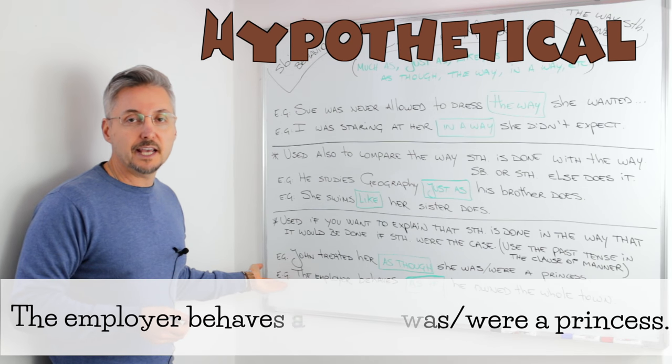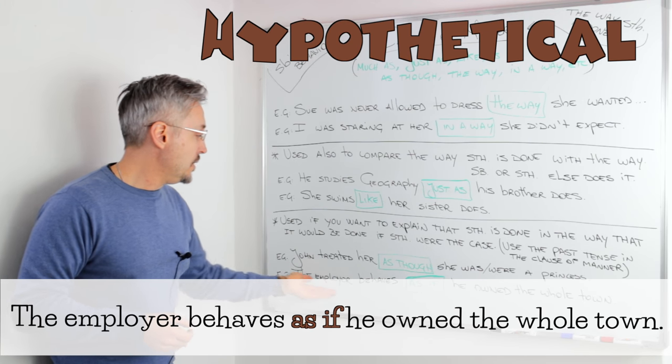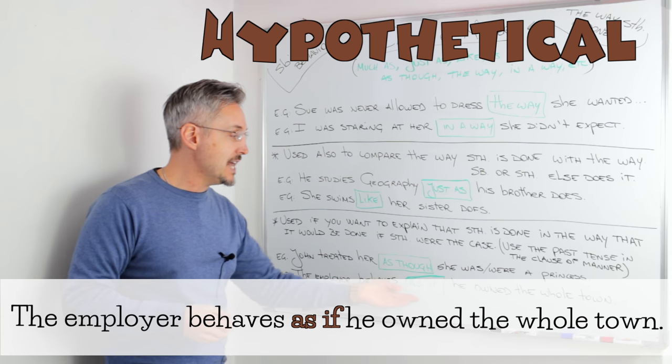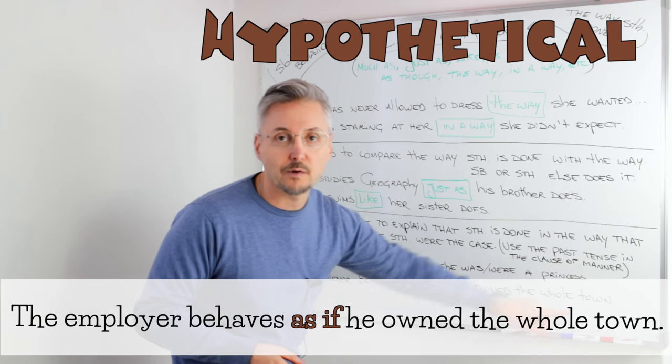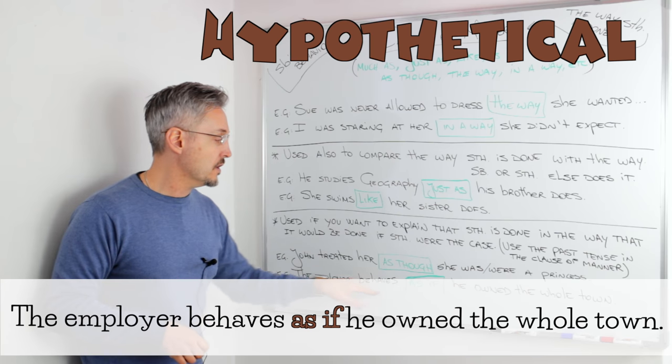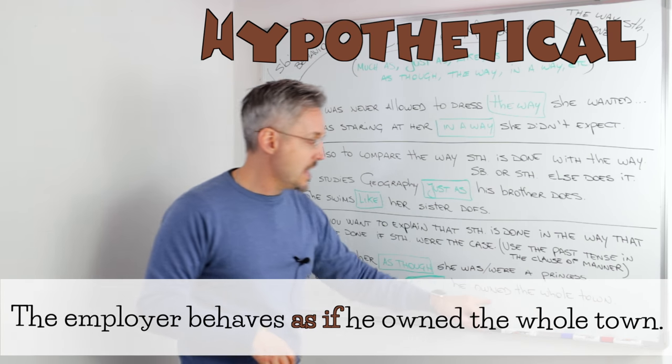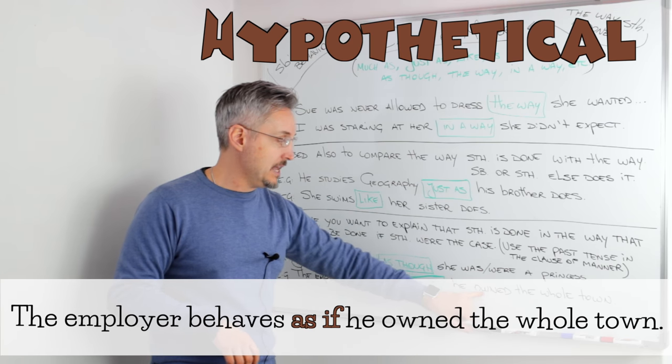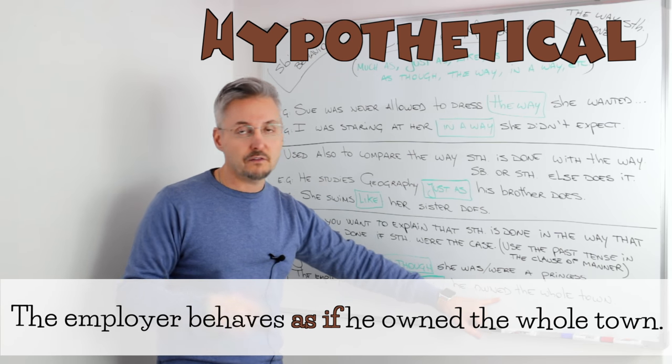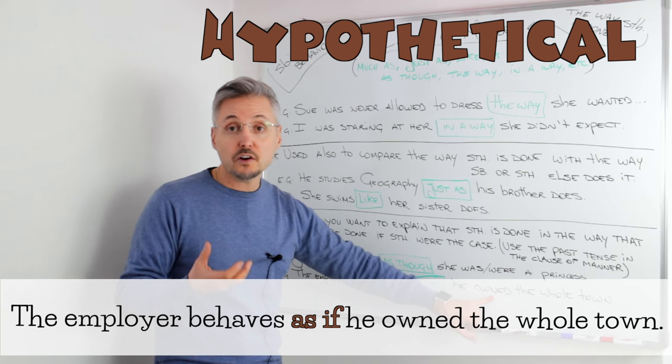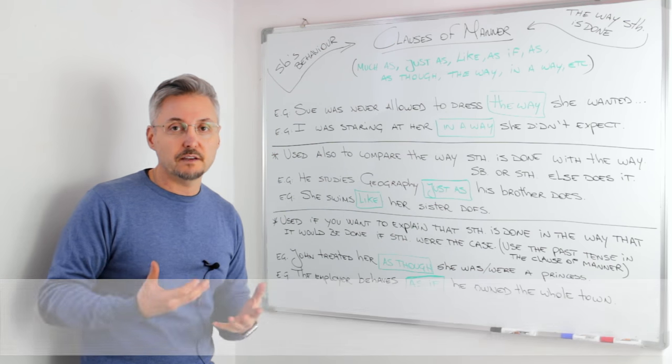The next example was, the employer behaves as if he owned the whole town. Owned is the past tense of the verb to own, and here would be considered a subjunctive.